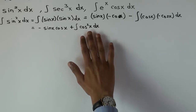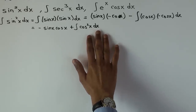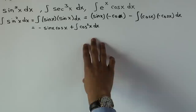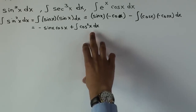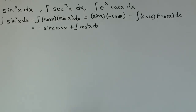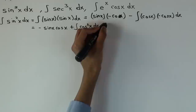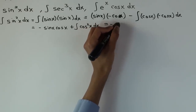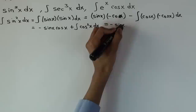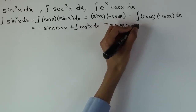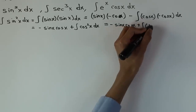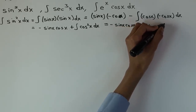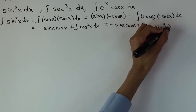This is the part where we use the trick. We write cos²(x) in terms of sin²(x). The relationship is cos²(x) = 1 − sin²(x). So this becomes minus sin(x)cos(x) plus the integral of (1 − sin²x) dx.